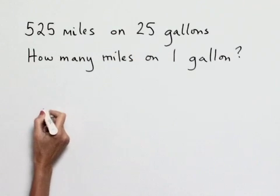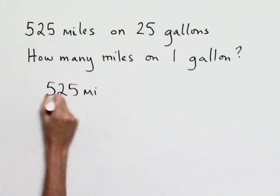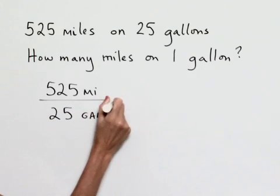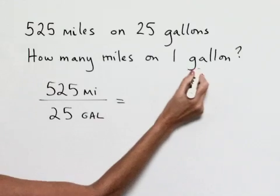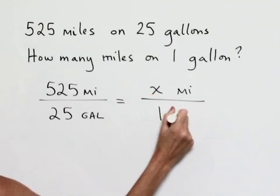We're going to set up a proportion. We'll have 525 miles for 25 gallons equals, and what we don't know is how many miles we'd have on one gallon. So we're going to have x miles on one gallon.